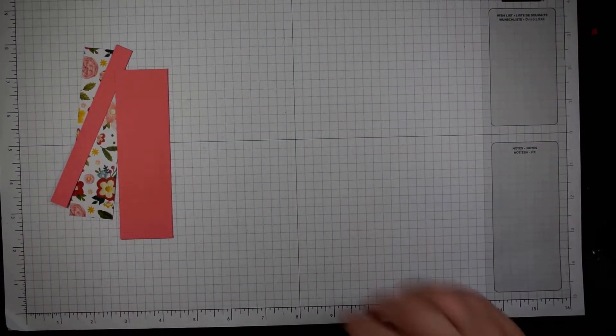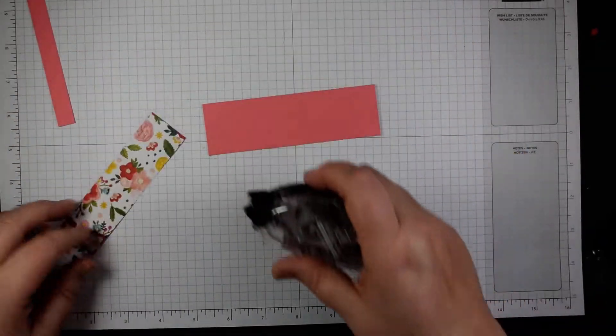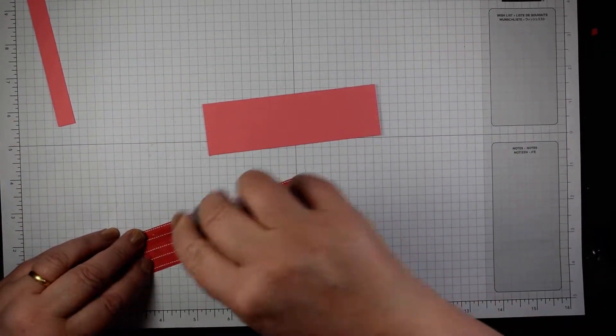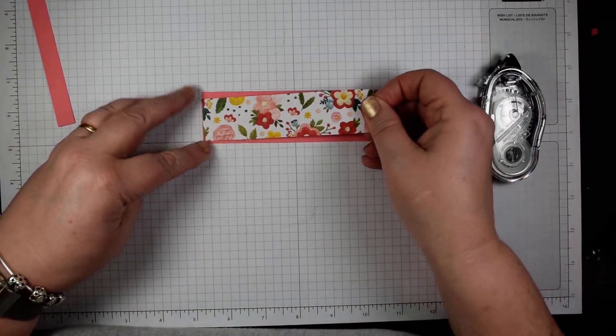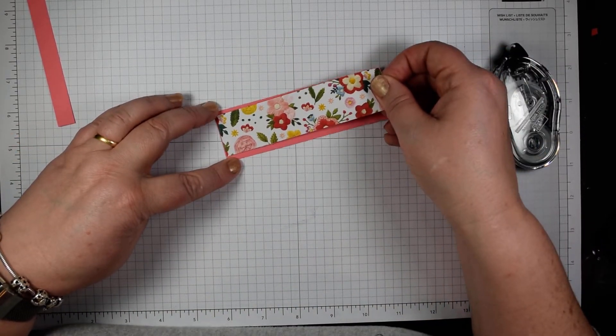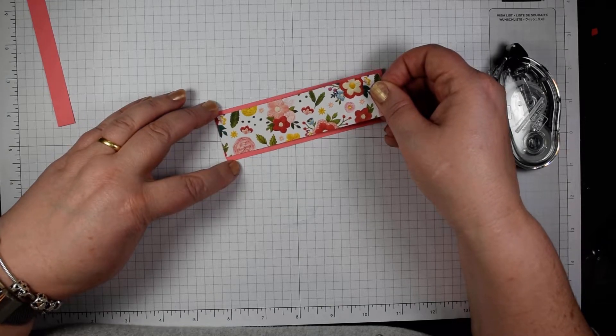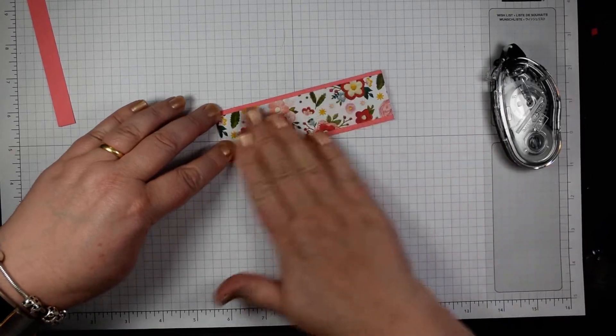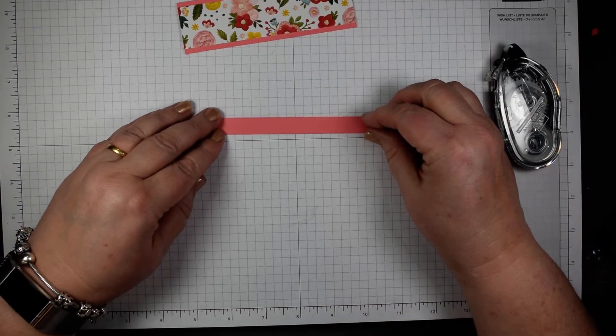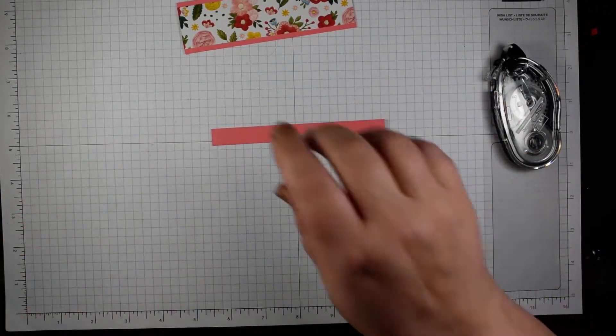And these layers are obviously very quick and easy to put together. Just butt that up against one end, just an even border. Okay, this is probably the trickiest bit which is the stamping of the thank you.